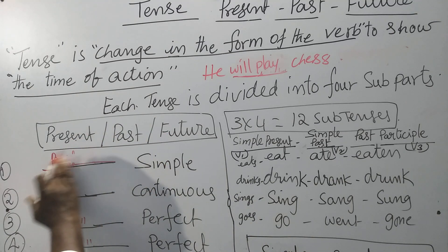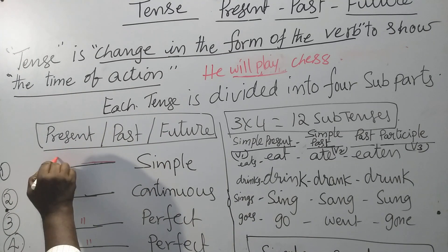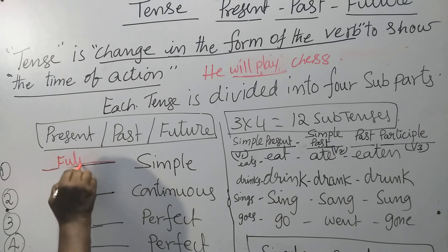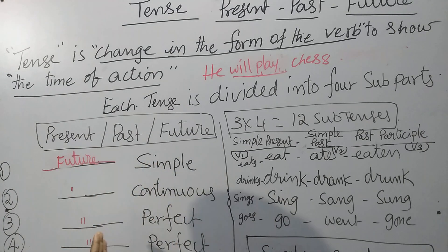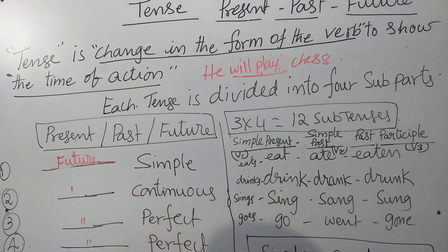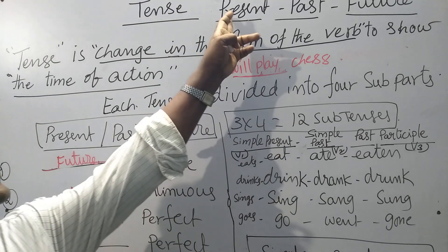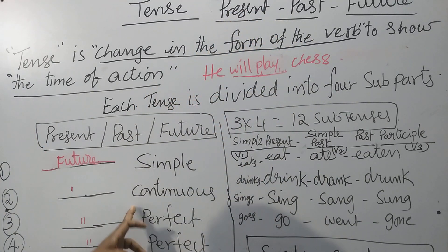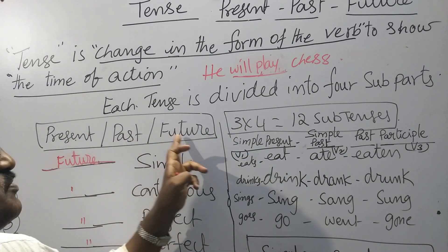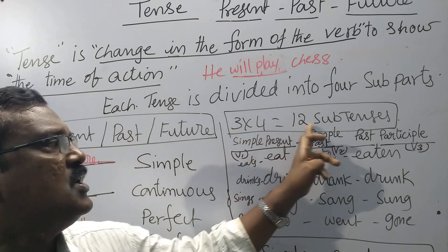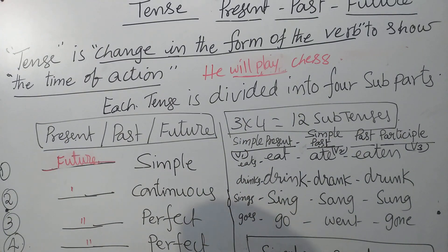Now, future tense: future simple, future continuous, future perfect, future perfect continuous. So in this way, each tense is divided into four sub-parts. That's why: present, past, future — three into four — twelve sub-tenses are there.